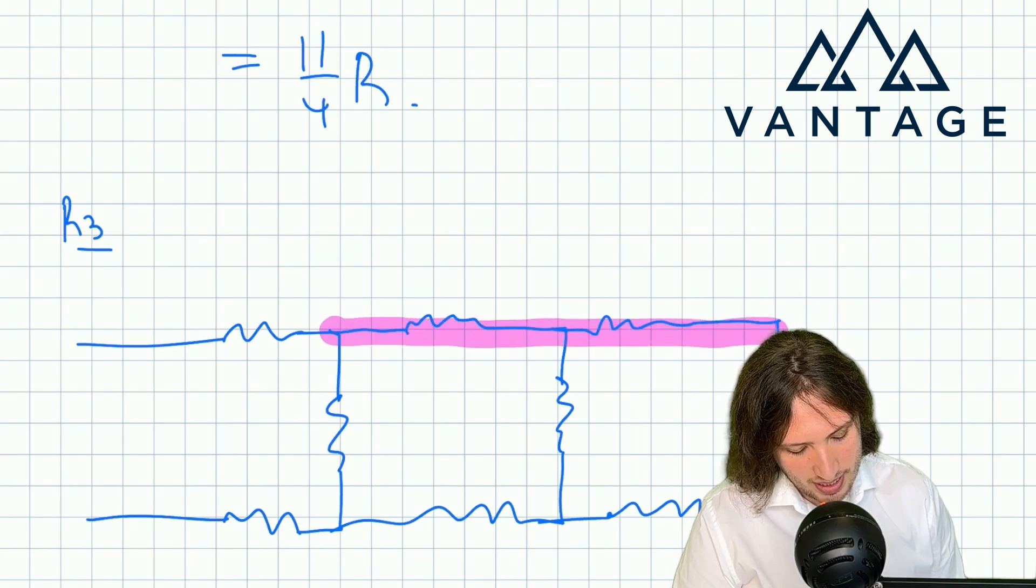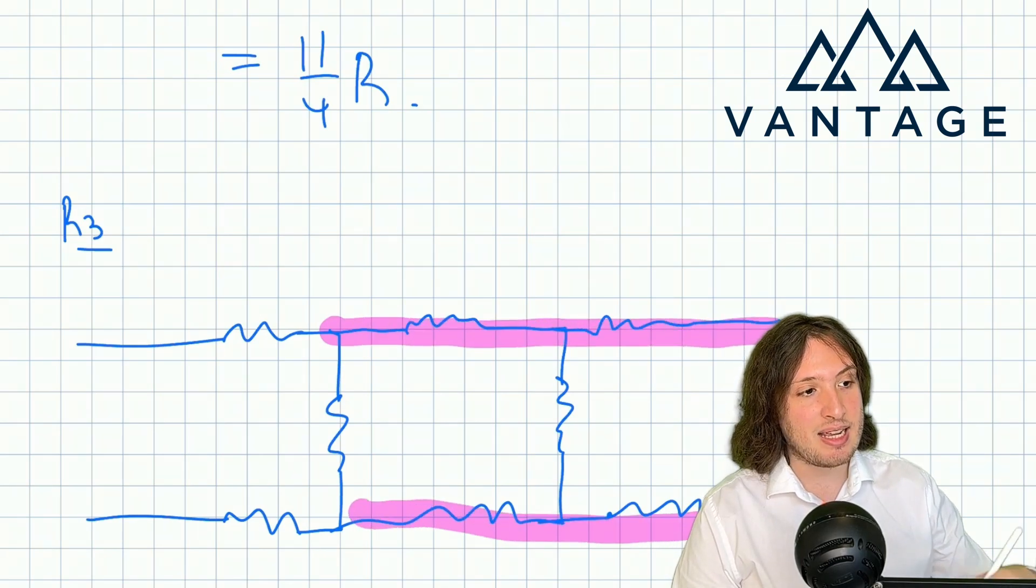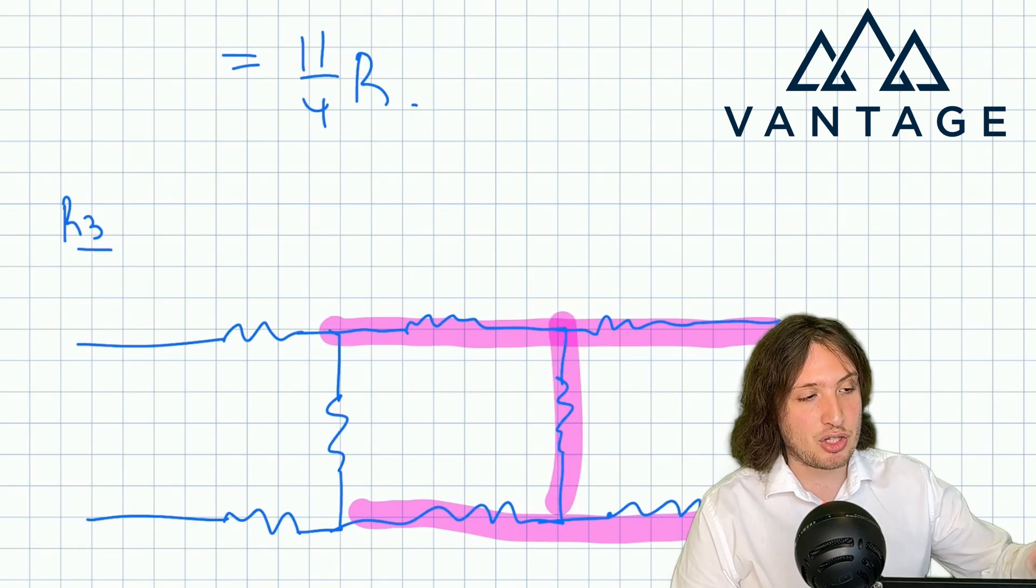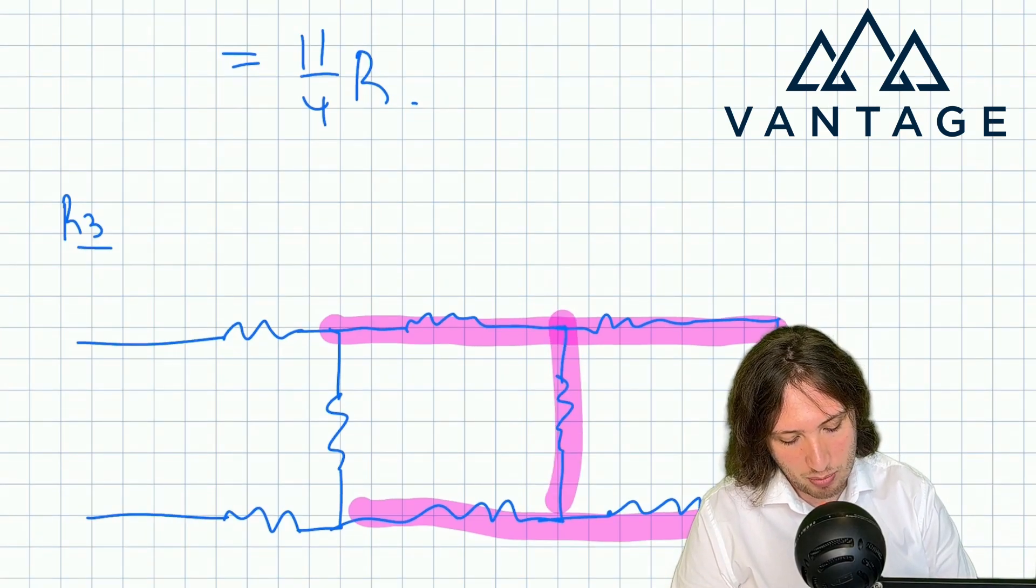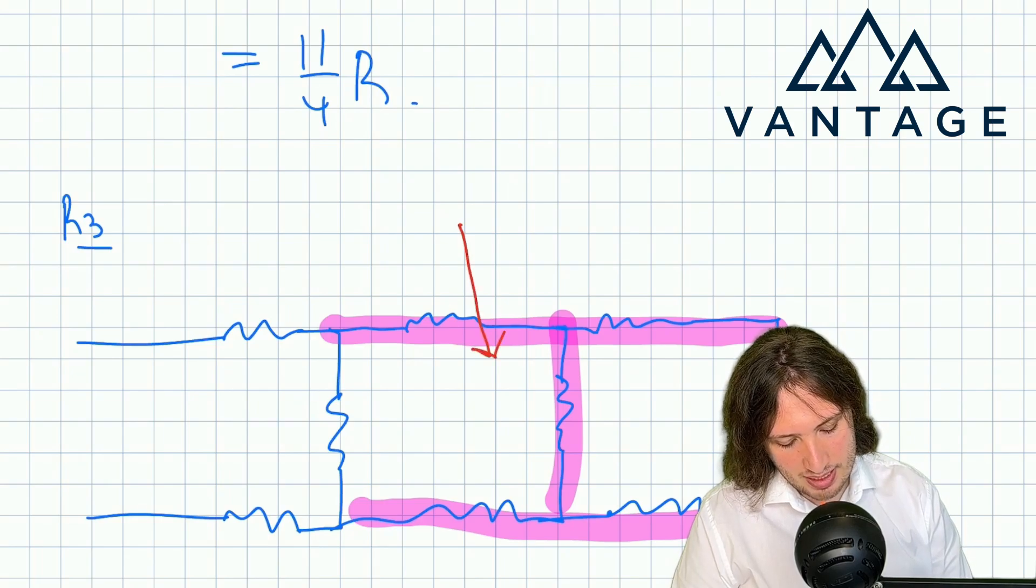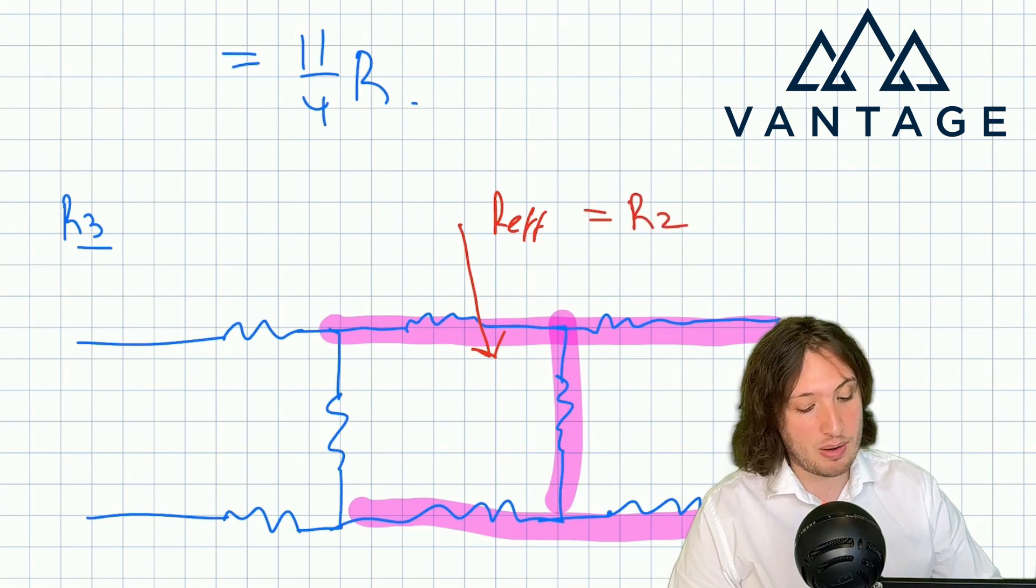And in light of what I was just saying about relating one case to the next, it's surely striking that this stuff here is precisely the situation that we said was captured by R2. This is the two rung problem. So what we can say for this thing is that this portion has effective resistance of R2.